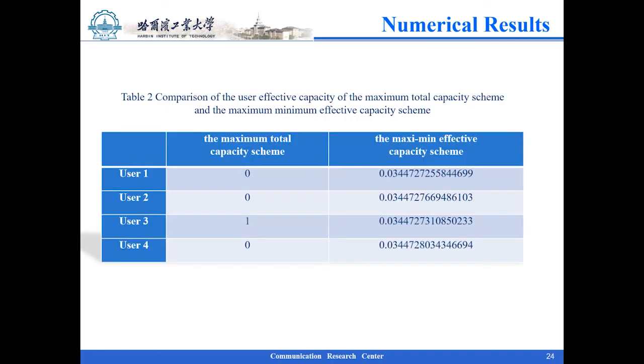It can be seen from Table 2 that the effective capacity is concentrated on one user in the maximum total capacity scheme. Since the goal is to maximize total capacity, the UAV will find the user with the largest effective capacity in the iterative process. This behavior is fatal to other users' information transmission. It is verified that this paper guarantees the fairness of users. It is worth noting that the fairness of users comes at the expense of reducing the total effective capacity.